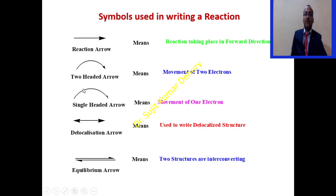Similarly, the curved single-headed arrow or fish-hooked arrow means only movement of one electron will take place. The delocalization arrow is used for the delocalization or the resonance stabilized structures. The last one, the equilibrium arrow, means the two structures are interconverting with each other.